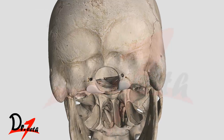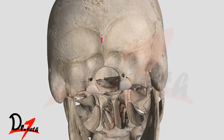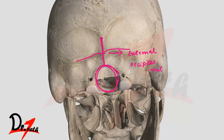There is also a line going from the external occipital protuberance toward the posterior aspect of the foramen magnum — that is called the external occipital crest. And from the middle of this external occipital crest, we have a line going outward called the inferior nuchal line.